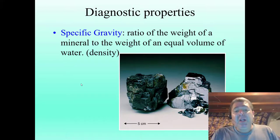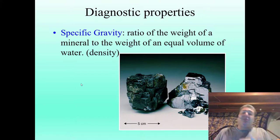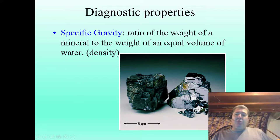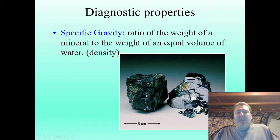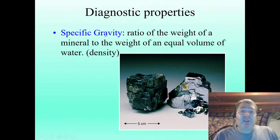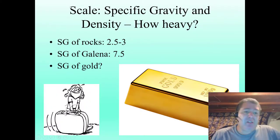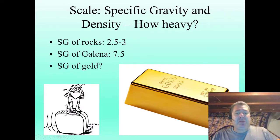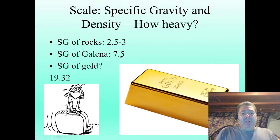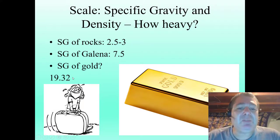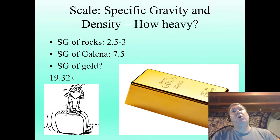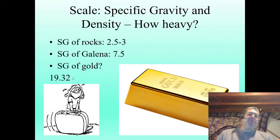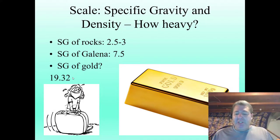Another diagnostic property that can be useful is density. Most minerals are about two and a half to three in specific gravity. But some are going to be quite a bit heavier — this mineral called galena is about seven times denser than water. So you're going to have a pretty good heft to it. Some you pick up and just think, whoa, that feels heavier than it should be — higher specific gravity. Gold has a density of 19.32 — almost 20 times denser than water. If a gallon of water weighs eight pounds, a gallon of gold would weigh 160 pounds.